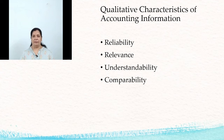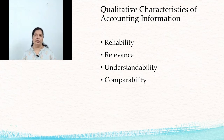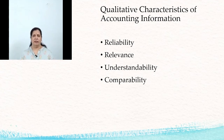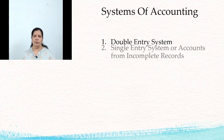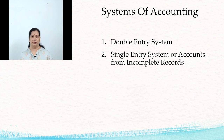The next qualitative characteristic is comparability, meaning comparison. There are two types: intra-firm and inter-firm. Intra-firm comparison means the comparison of accounting information within the firm between the previous year and the current year. Inter-firm means comparison between two firms of the same nature.